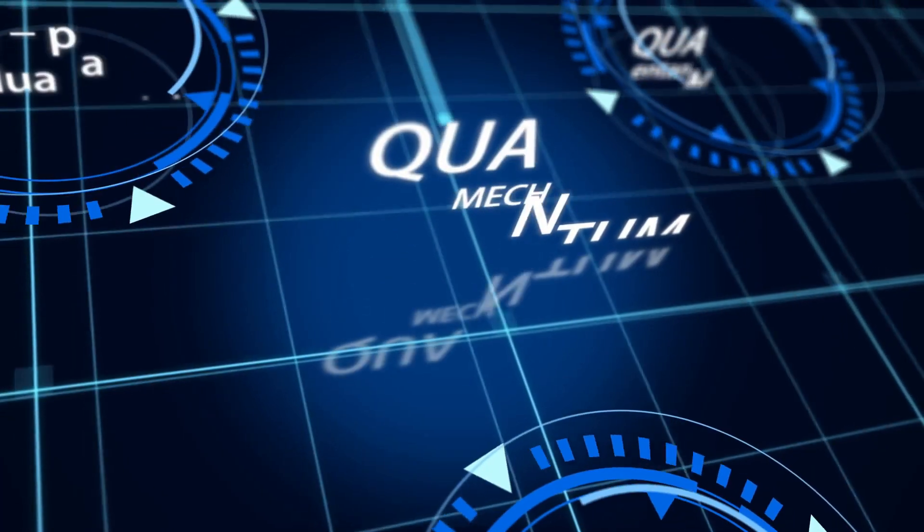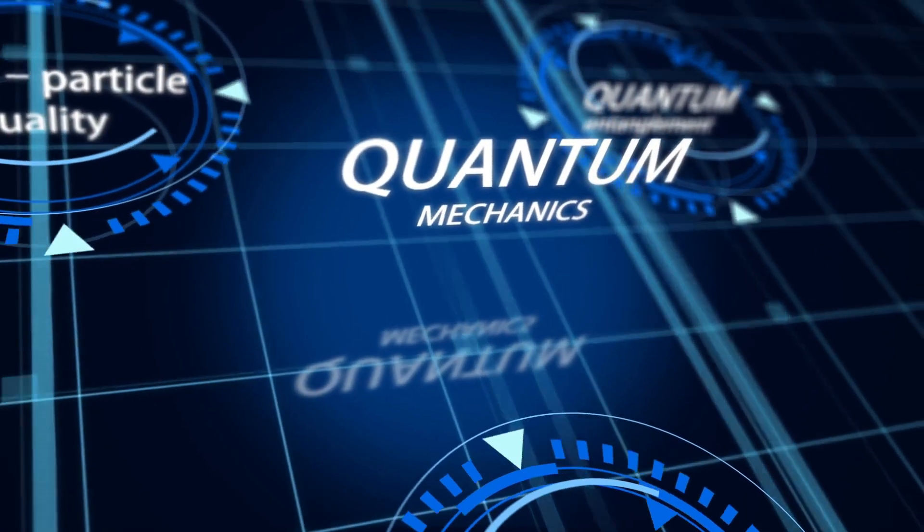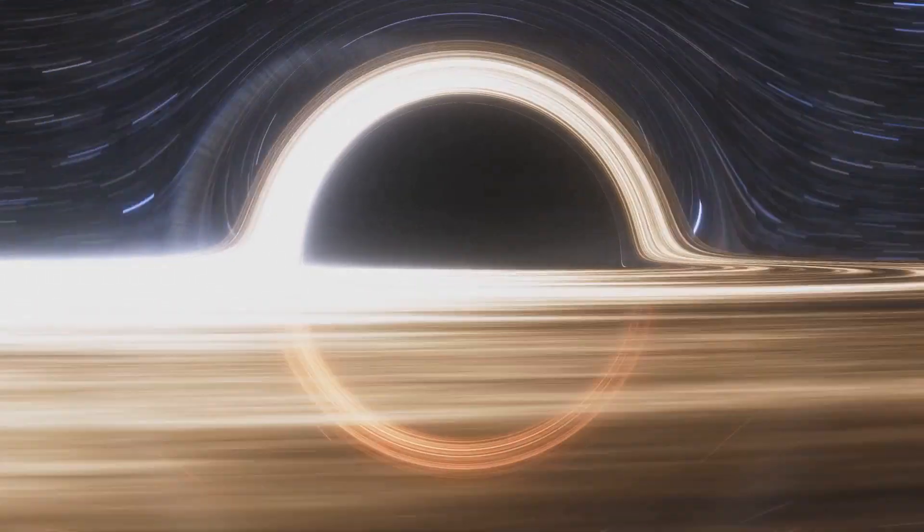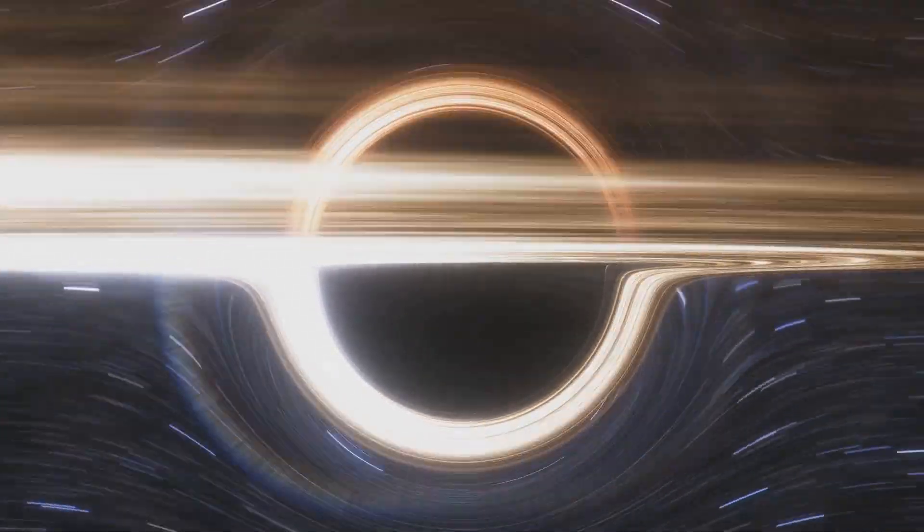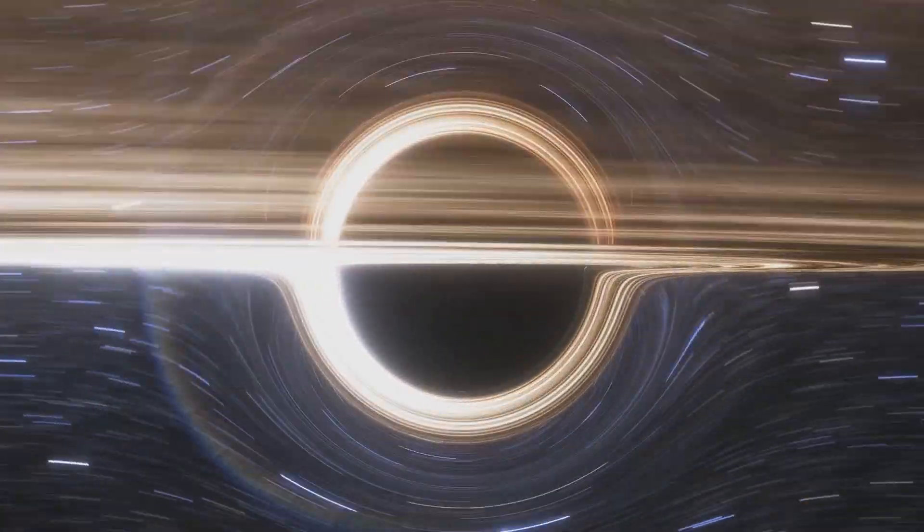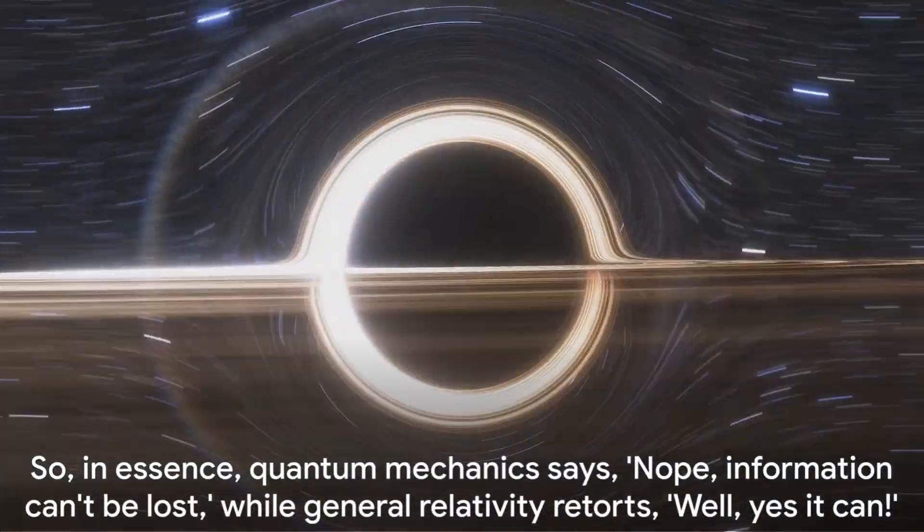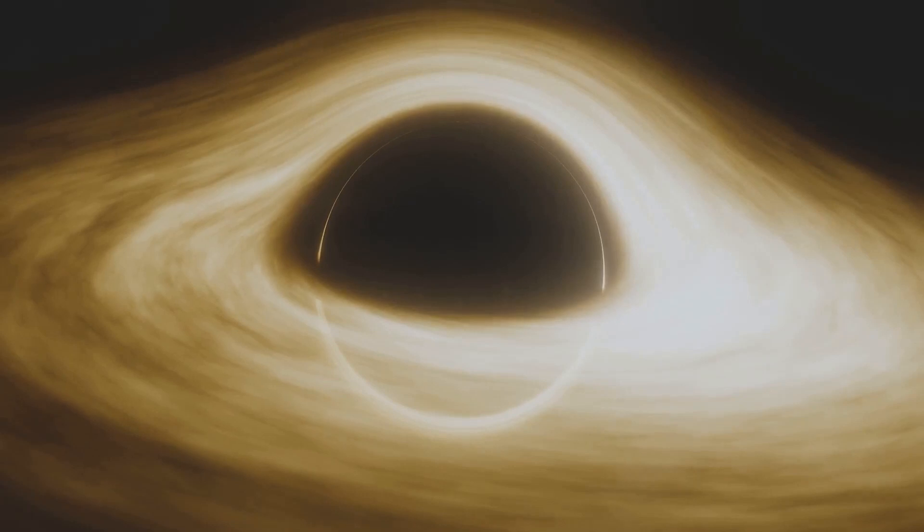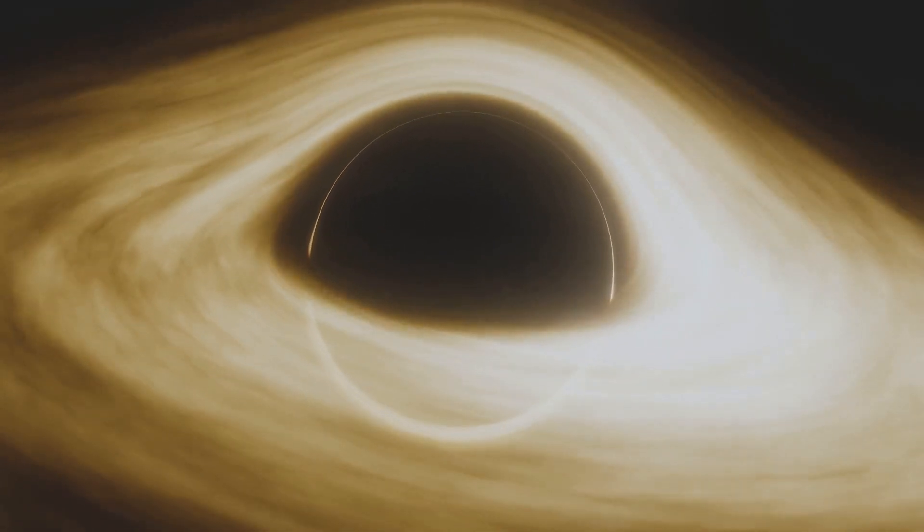Here's the conundrum. According to quantum mechanics, information about a particle state, think of it as its identity card, can never be lost. On the other hand, general relativity predicts that anything plunging into a black hole is lost forever, including its information. So in essence, quantum mechanics says nope, information can't be lost, while general relativity retorts, well, yes it can. A real head-scratcher, isn't it?